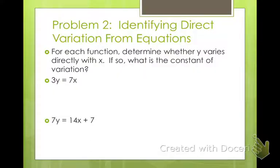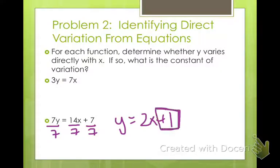What about this one? Okay, to get y by itself, what would we have to do? Divide everything by 7. I get y equals 2x plus 1. Because we have this plus 1 on the end, this makes it so that it is not a direct variation. So that is not a direct variation.